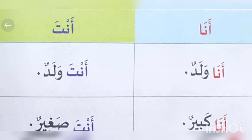Ana — I am. Anta — you are. Ana walad — I am a boy. Anta walad — you are a boy. Ana kabir — I am big. Anta sagheer — you are small.